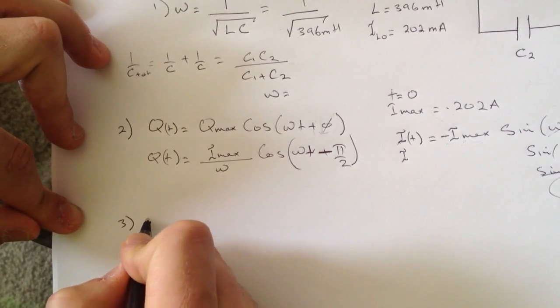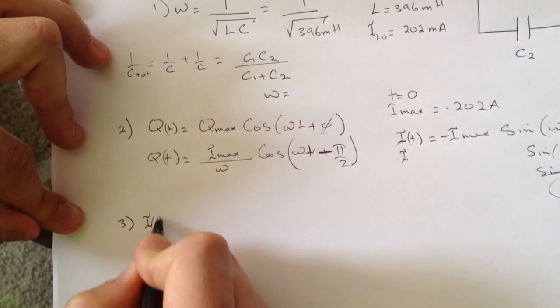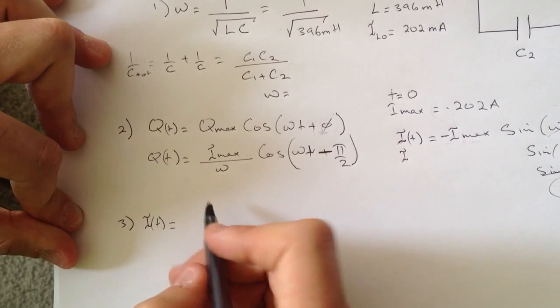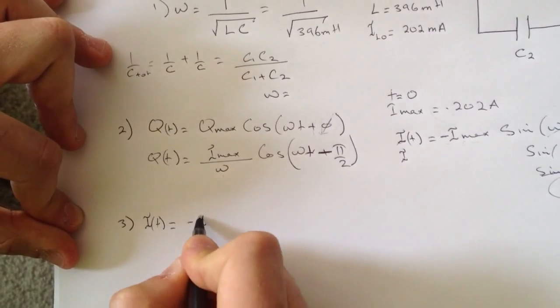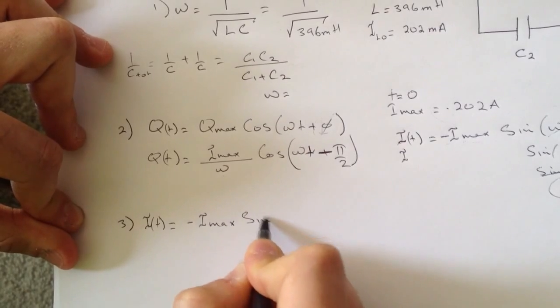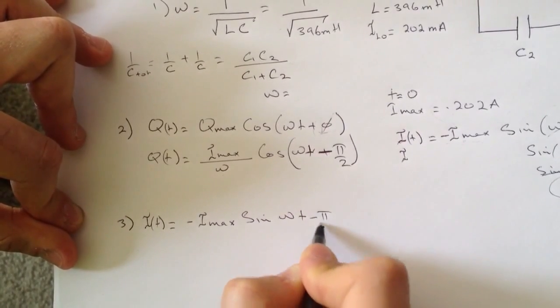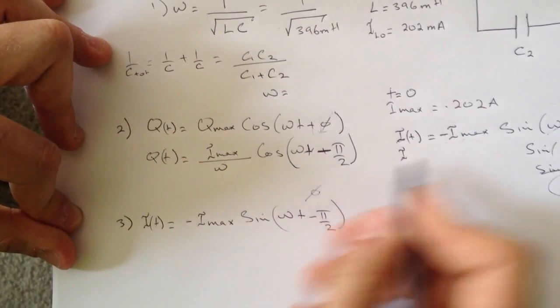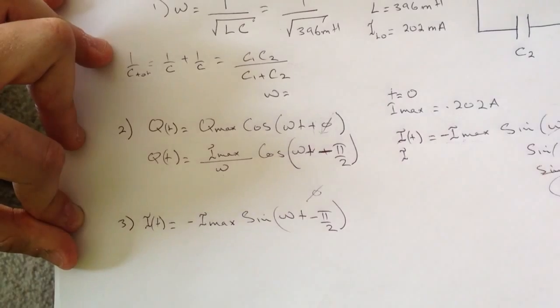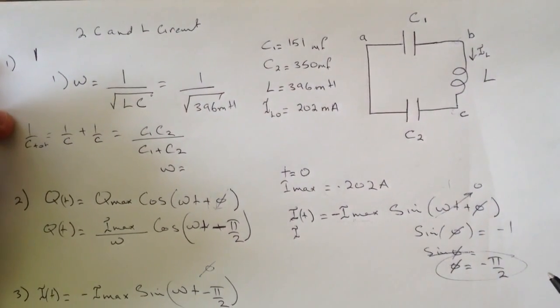So we can use this equation. When we differentiate, we'll get it equal to minus I max sine of omega t minus pi over two. We use the same phi here because it's the same one. This is the voltage we're looking for.